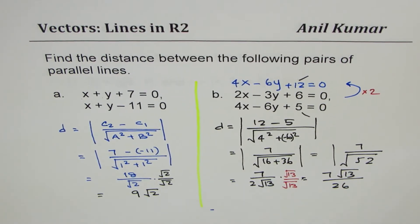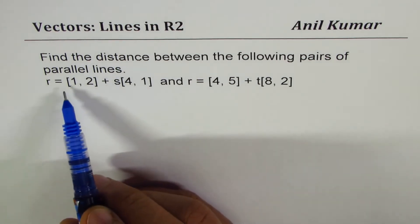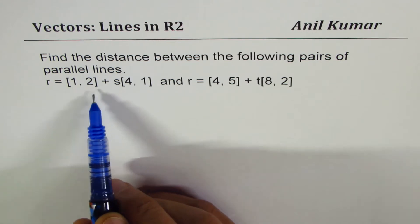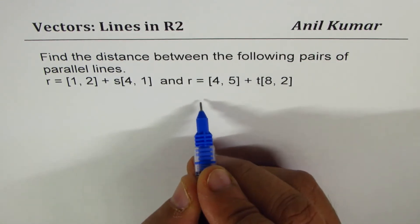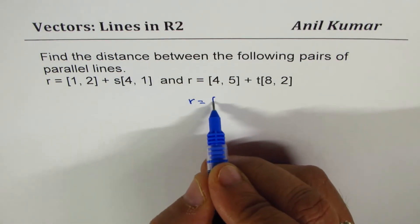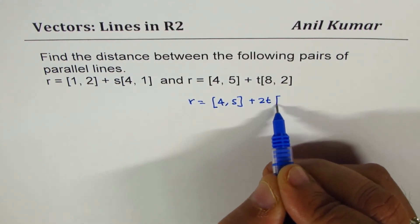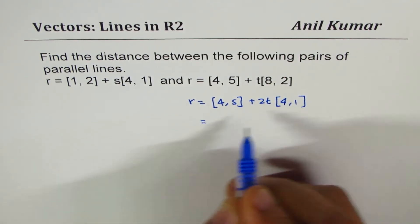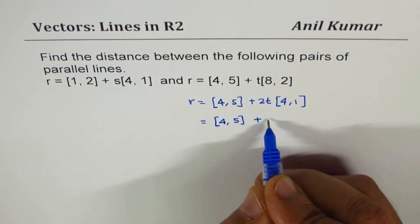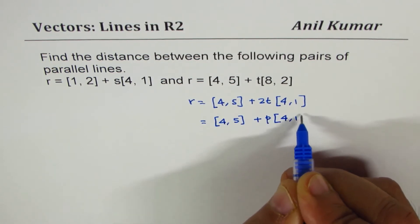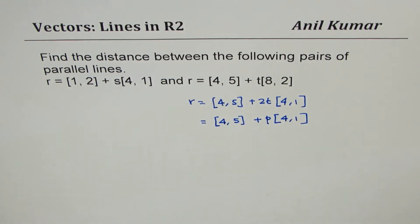Let's move on to one more example: find the distance between the parallel lines given in vector form — r = (1, 2) + s(4, 1) and r = (4, 5) + t(8, 2). Notice that (8, 2) = 2×(4, 1), so both lines have the same direction vector (4, 1), confirming they are parallel lines.